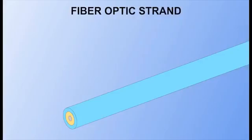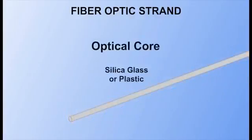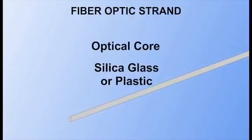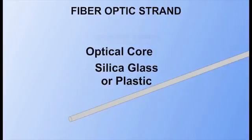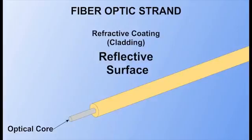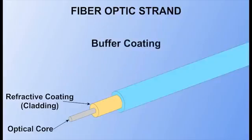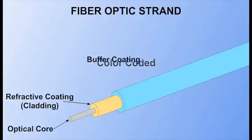A fiber optic strand consists of multiple layers. The actual conductor is a silica glass or plastic core. This core is surrounded by a refractive coating called cladding, which provides a reflective surface and causes the light to travel along the entire length of the core. The third layer is a buffer coating to protect against moisture and other damage. It also prevents light from escaping the strand and may have a color coating for identification purposes.